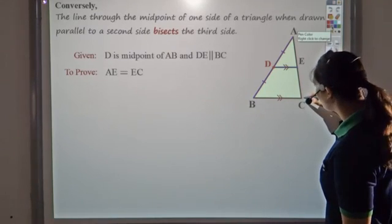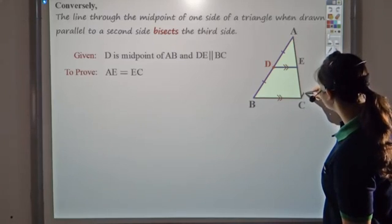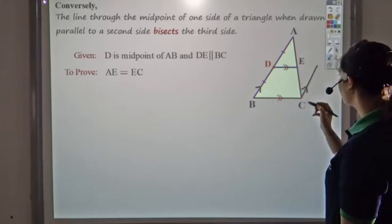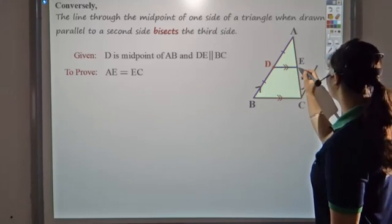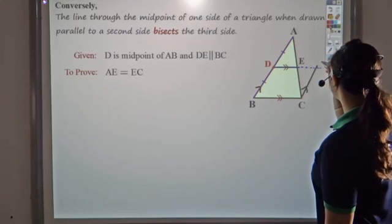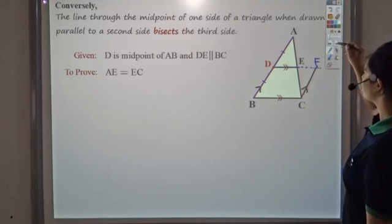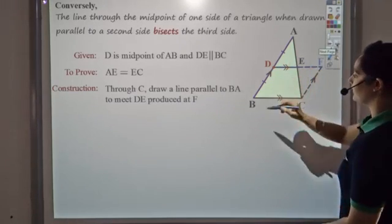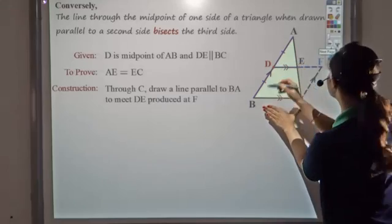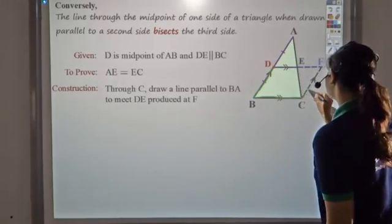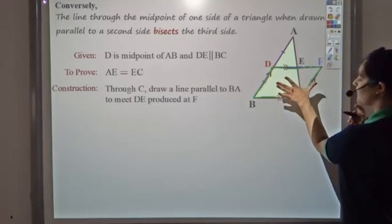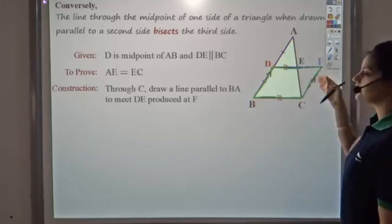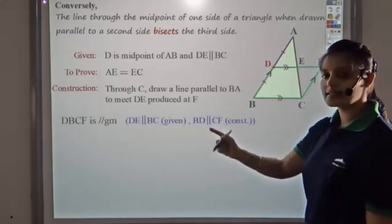Let us draw a line from C which is parallel to BA. This line, if we extend DE, meets at a point F. So we make CF parallel to BA and complete the diagram. Now in quadrilateral DBCF, we have DB parallel to CF and DF parallel to BC — two pairs of parallel lines. Hence DBCF is a parallelogram.